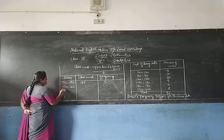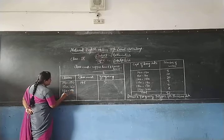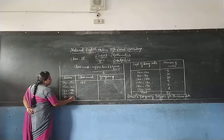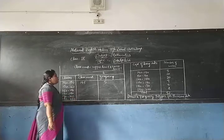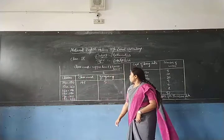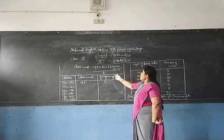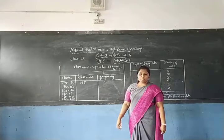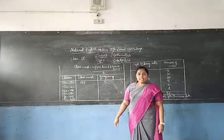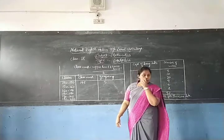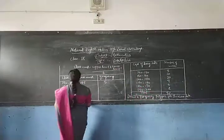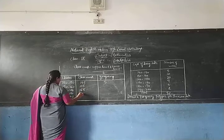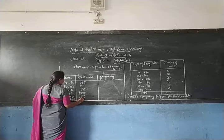Continuing in the same manner: 150 to 160 gives class mark 155; 160 to 170 gives 165; 170 to 180 gives 175; 180 to 190 gives 185; and 190 to 200 gives class mark 195. The class mark formula — upper limit plus lower limit divided by 2 — is applied to each interval.